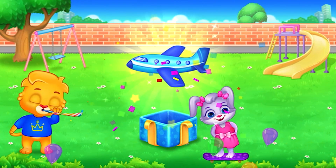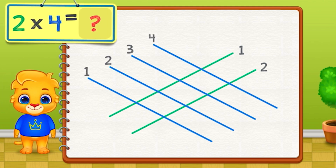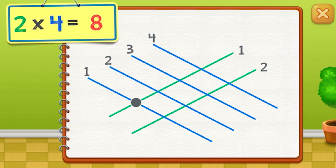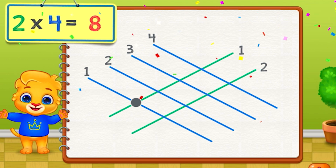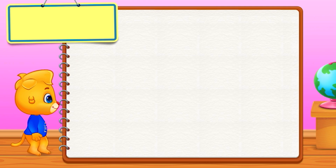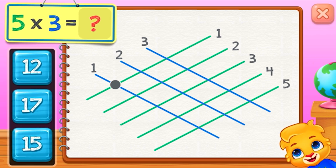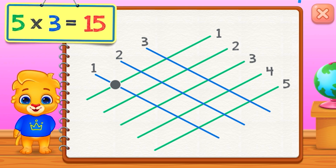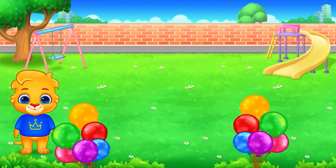Wow! 2 times 4 equals... 8. 2 times 4 equals 8. 5 times 3 equals... 15. 5 times 3 equals 15. Good job!